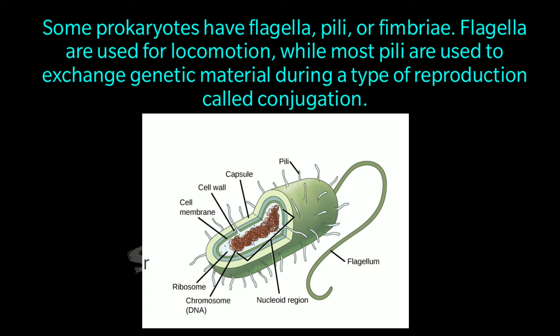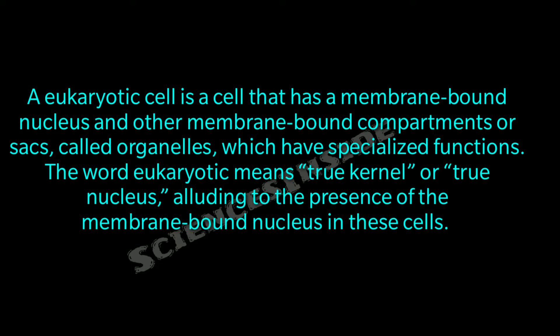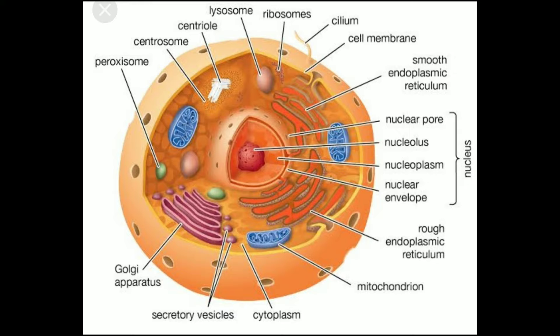A eukaryotic cell is a cell that has a membrane-bound nucleus and other membrane-bound compartments or sacs called organelles, which have specialized functions. The word eukaryotic means 'true kernel' or 'true nucleus' because of the presence of a membrane-bound nucleus. Here is a picture of a eukaryotic cell showing the various organelles we have read about — you can go through it in detail.